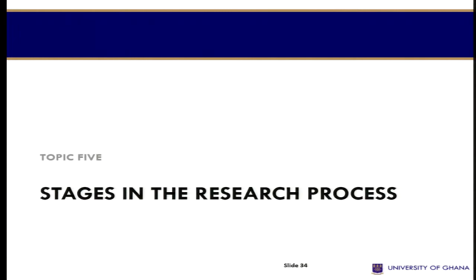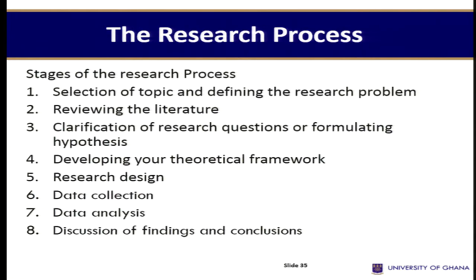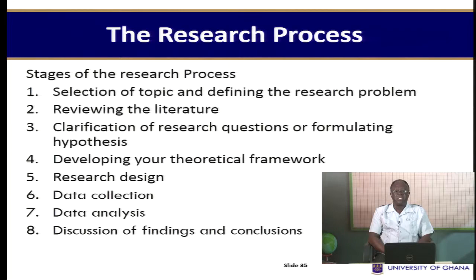Ladies and gentlemen, let us move on to topic five, which talks about the stages in the research process. The research process is simply the steps we follow when we want to conduct research. In the social sciences, various approaches suggest different steps, but for our purposes we focus on the following: first, selection of topic and defining the research problem; second, reviewing the relevant literature; third, clarifying research questions and/or formulating hypotheses; then developing your theoretical framework; crafting your research design; collecting data; analyzing the data; discussing the findings; and then providing a conclusion.